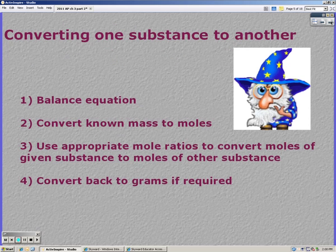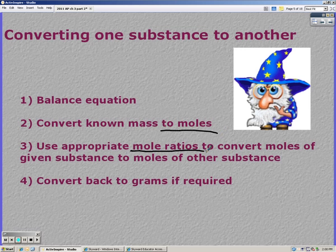Converting between one substance to another is stoichiometry. You have to balance the equation. Convert whatever they give you to moles. Use appropriate mole ratios which you get from a balanced equation to convert moles of one substance to another, and then convert back to grams or whatever substance you're trying to convert to.